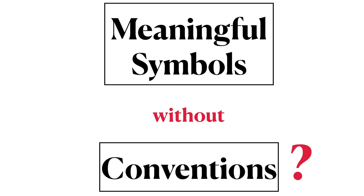We can see from these attempts in 17th century Europe that this is a very non-trivial problem. And in fact, we know of no good way to have meaningful symbols without conventions. Nevertheless, let's take a look at three modern attempts that go at least part way towards attempting such a solution. None of them succeeded to any great degree, but it will be useful for us to look at these as informative case studies.